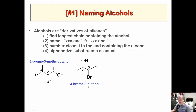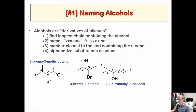For a more complex example with numbering shown: counting from the end closer to the OH gives a 6-carbon chain with the alcohol at position 3, making it 3-hexanol. There are three methyls: two on carbon 2 and one on carbon 5. That gives 2,2,5-trimethyl-3-hexanol. For stereochemistry, you add R and S designators: if it's 3R, 4S, 4-bromo-3-hexanol, you use your thumb method to assign each chiral center.